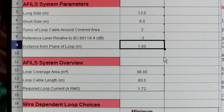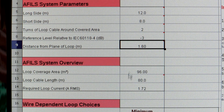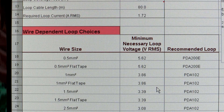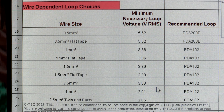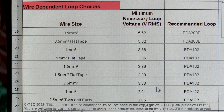The system overview calculates loop coverage area, loop cable length, and the required loop current. Finally, consult the wire-dependent loop choice box to see which amplifier and loop cable best suits your application.